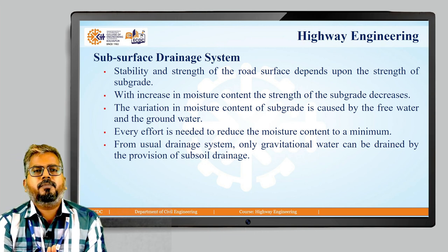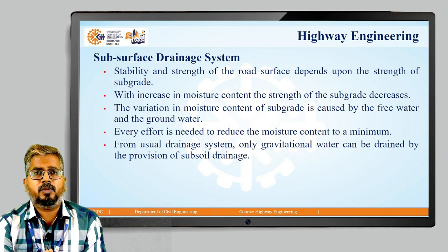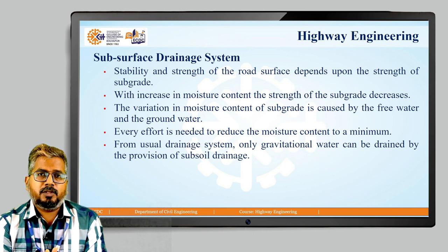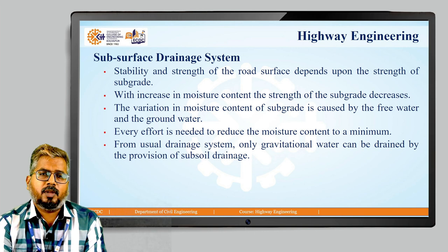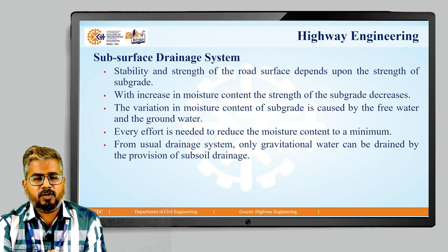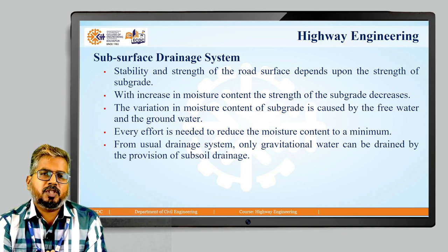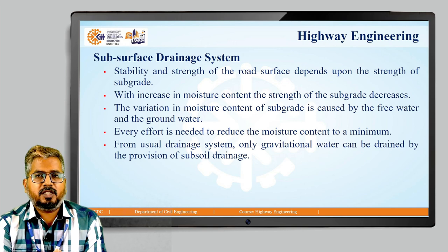The stability and strength of the road surface heavily depends upon the strength of the subgrade, as we have discussed earlier. With the increase in moisture content, the strength of the subgrade is compromised. The variation in moisture content of the subgrade is caused due to free water or groundwater. Every effort is needed to minimize the moisture content to the least possible level. From the usual drainage system, only gravitational water can be drained by the provision of sub-soil drainage.